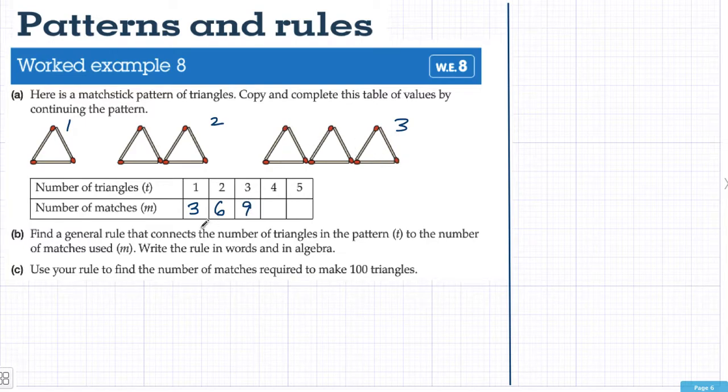Three, six, nine. You can probably see the pattern here is that each time we're going up by three. So the next one would be nine plus three is 12 and 12 plus three is 15. We've actually filled in the table.